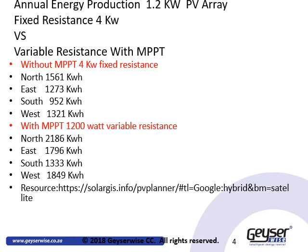We will now look at the annual energy production on a 1.2 kW PV array — a fixed resistance 4 kW element versus a variable resistance element with MPPT — and what energy production will be achieved with panels facing in different directions.